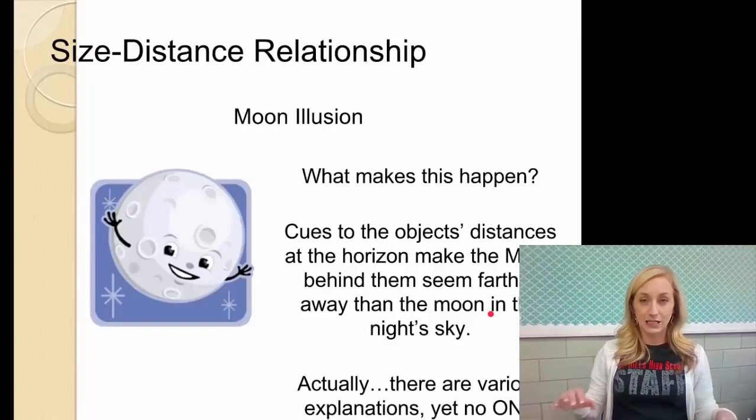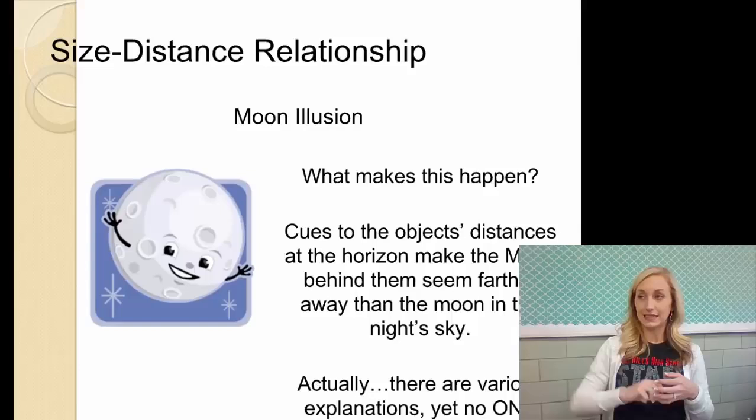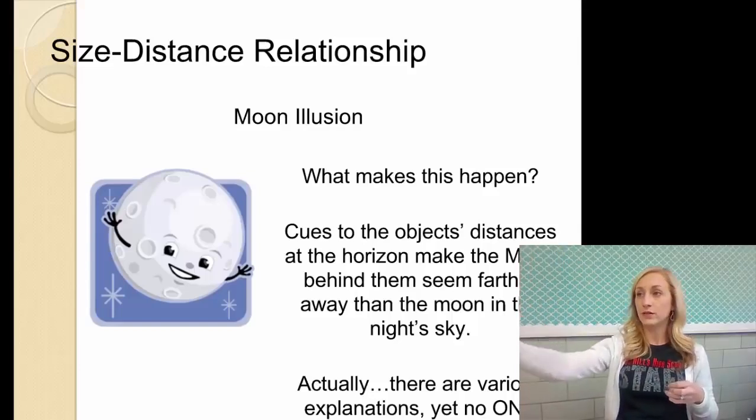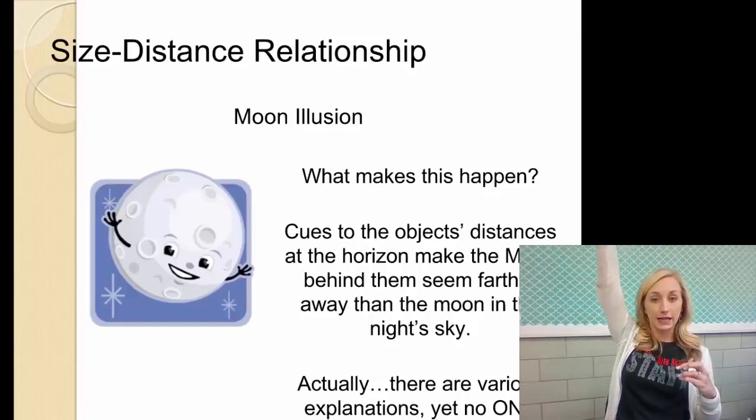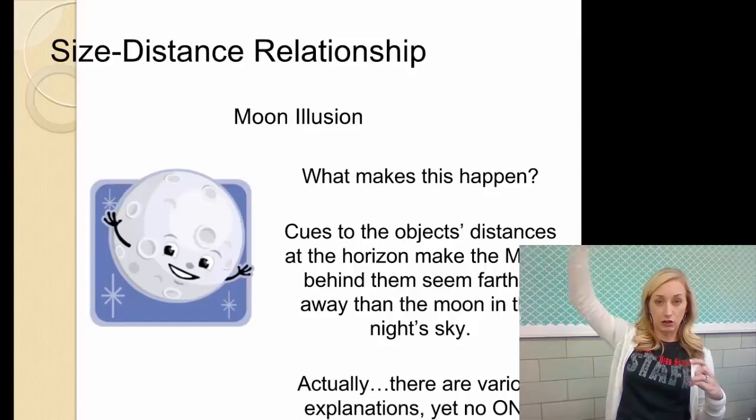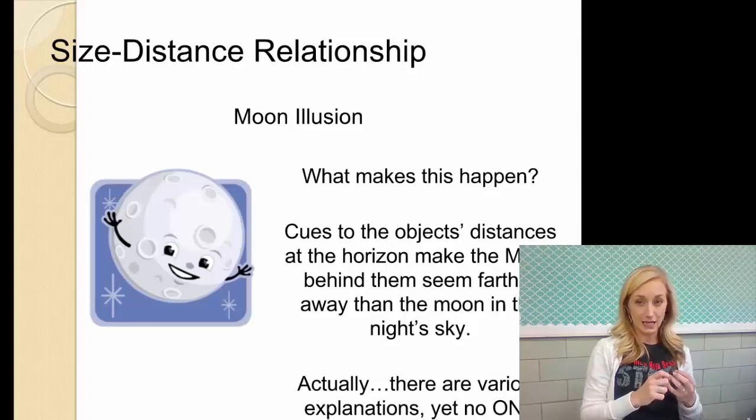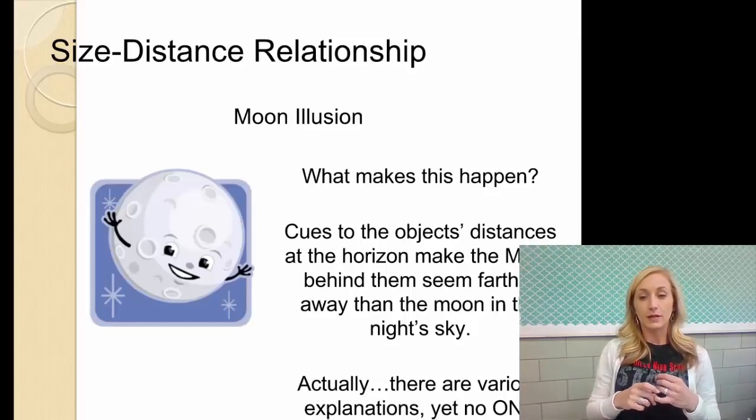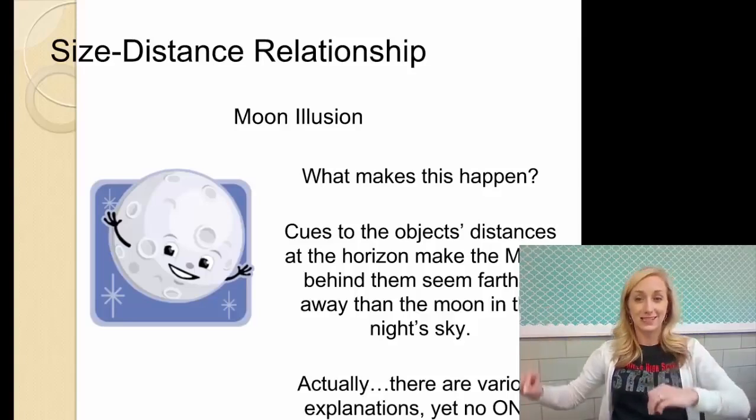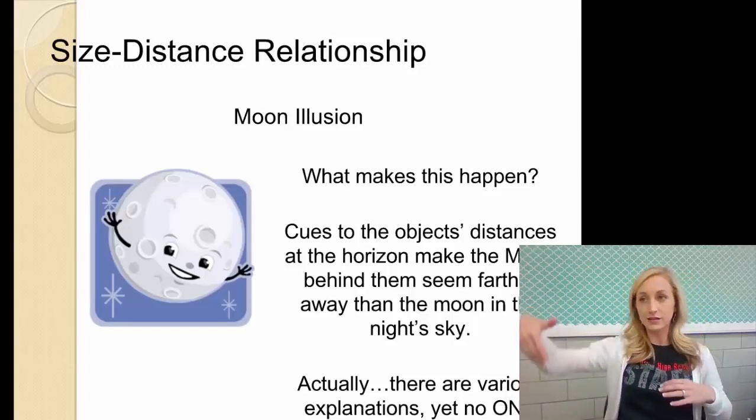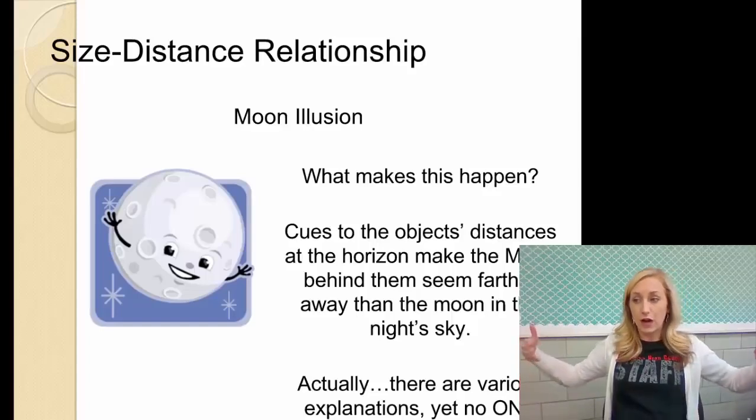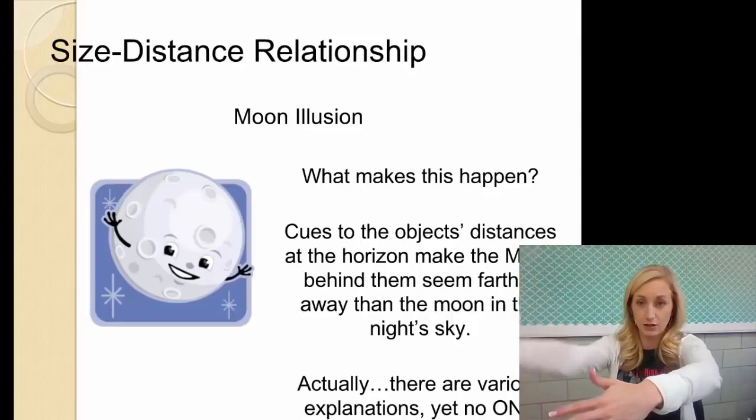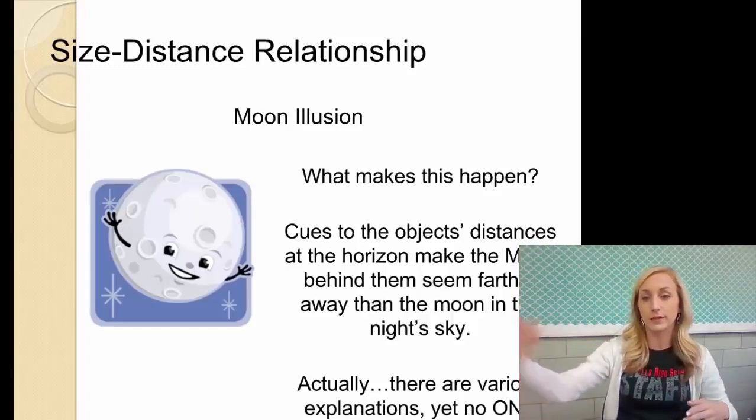Another kind of illusion with size-distance relationship is the moon illusion. The moon illusion states that as the moon is on the horizon, we appear the moon to be larger, and farther away. So we think that the moon is larger and farther away than when it is up in the night sky. It appears to be smaller and closer. So cues to the object's distances at the horizon make the moon behind them seem farther away than the moon in the night sky. Here's the reasoning behind it. It's the object's distances at the horizon. So when the moon is on the horizon, there's hills, there's trees, there's maybe even buildings that cause you to, that's interposition. A building or a hill or a tree is blocking part of the moon. If you're driving on a road, the linear perspective makes it appear to be farther away. Those distance cues make the moon appear to be larger and farther away.